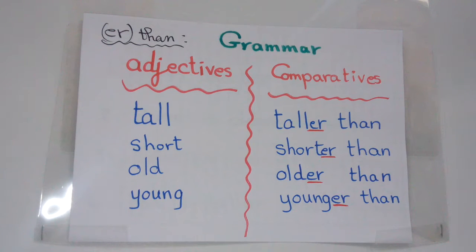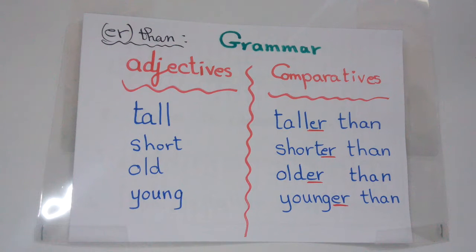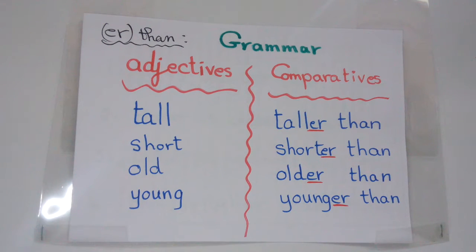When I compare between two things or two people, I simply add ER to the adjective plus 'than' — بضيف للصفة ER وبعدها بضيف كلمة than. Taller than — أطول من، shorter than — أقصر من، older than — أكبر من في السن، younger than — أصغر من في السن.